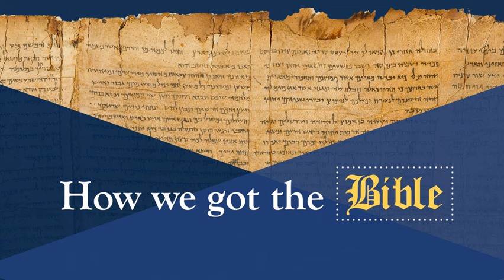We looked at the text of Scripture, spent a lot of time looking at manuscripts and how scholars compare these different manuscripts to each other to arrive at the earliest and best readings for different verses throughout the whole Bible. Secondly, we looked at translation philosophies and decisions. And now we're on to the subject of bias.